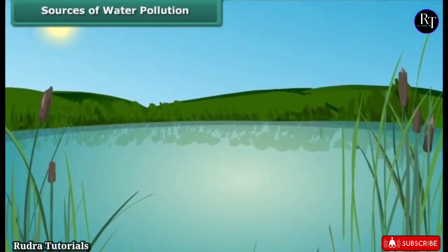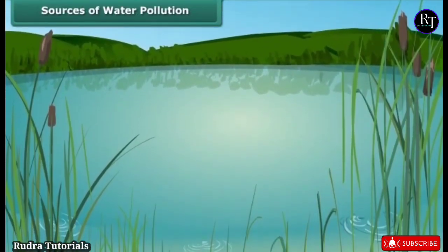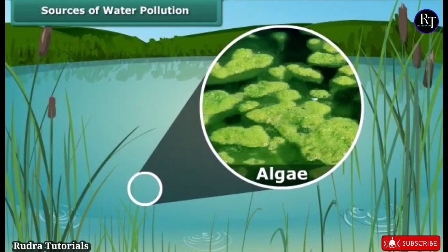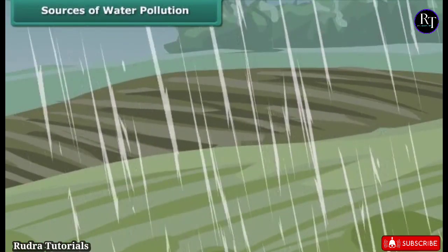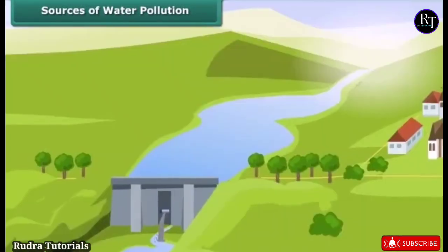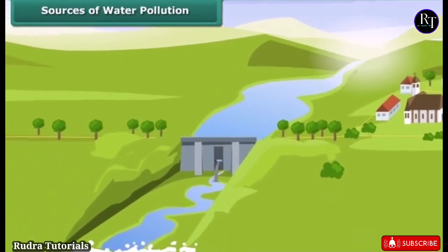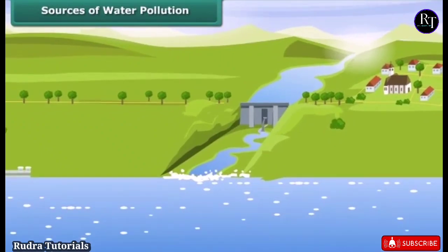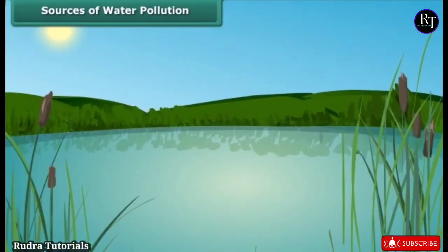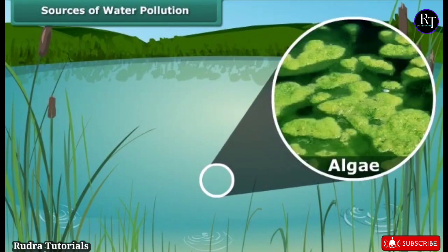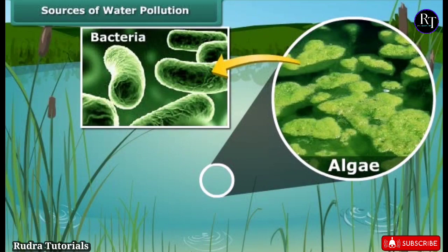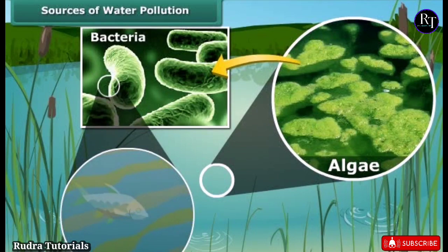Have you seen ponds which look green from a distance? This is due to algae grown in them. Do you know how these algae grow in the pond? During rainfall, large amounts of fertilizers get washed from the fields and fall into the ponds and rivers. These washed-off fertilizers act as nutrients for algae to flourish. When these algae die, they serve as food for decomposers like bacteria. Bacteria use up most of the oxygen in the water, and as a result, fish and other aquatic animals die due to lack of oxygen.